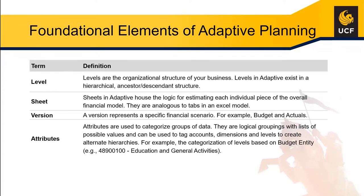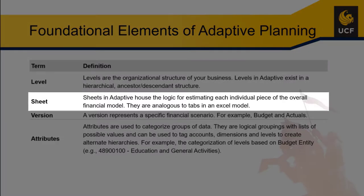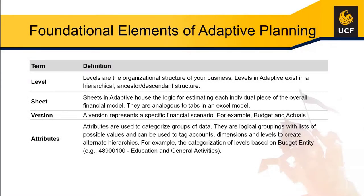The next key item is sheets — we'll do some navigation to these today. Sheets are the base level of data entry in Adaptive. When we're entering our budgets, forecasts, or really any information, we also have personnel sheets where we'll be entering data for HR purposes, to help facilitate budgeting. That's where we do our faculty, staff, and salary projections. We're not going to go into data entry today — that's in a future section — but we'll show you how to get to these individual sheets and do some basic navigation within them.